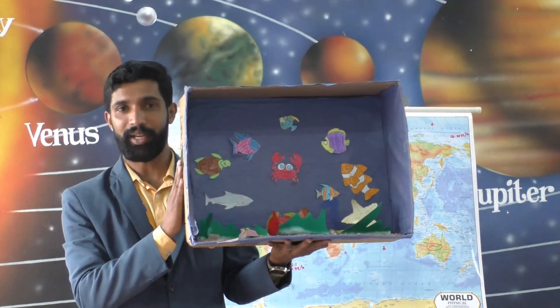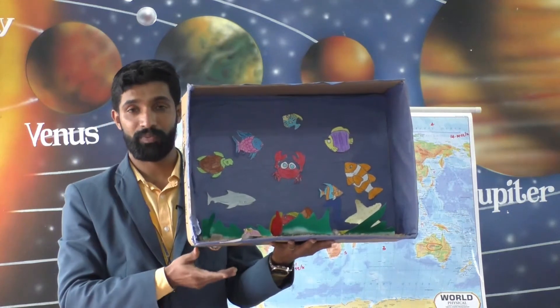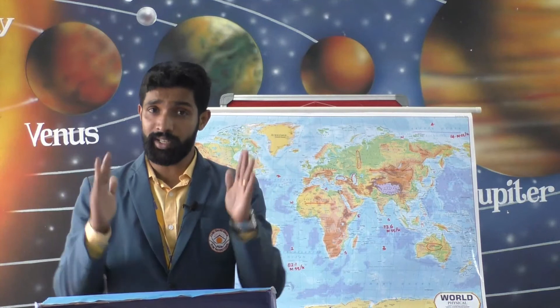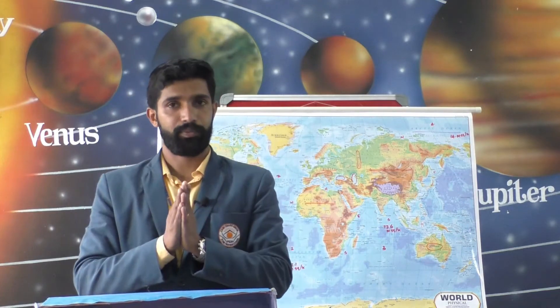All the water bodies on the earth's surface such as the oceans, seas, rivers and lakes together make up the hydrosphere. It also includes the ice sheets in the polar and high mountain regions, underground water, and water vapor in the air. Our earth is often referred to as a watery planet because about 71% of the surface of the earth is covered with water. No wonder our earth looks blue in color when seen from space, hence the name blue planet.